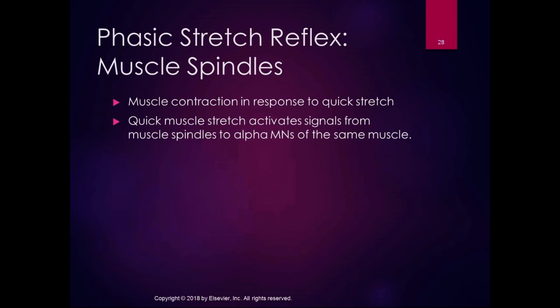The phasic stretch reflex from the muscle spindles is a muscle contraction in response to a quick stretch. When we test reflexes with a reflex hammer — like the patellar tendon reflex — the quick stretch from hitting the tendon with the mallet activates signals from muscle spindles to alpha motor neurons in the same muscle, and we get that response.